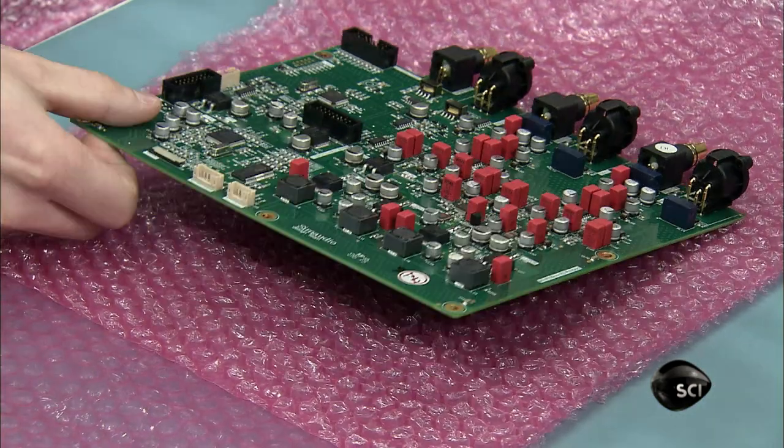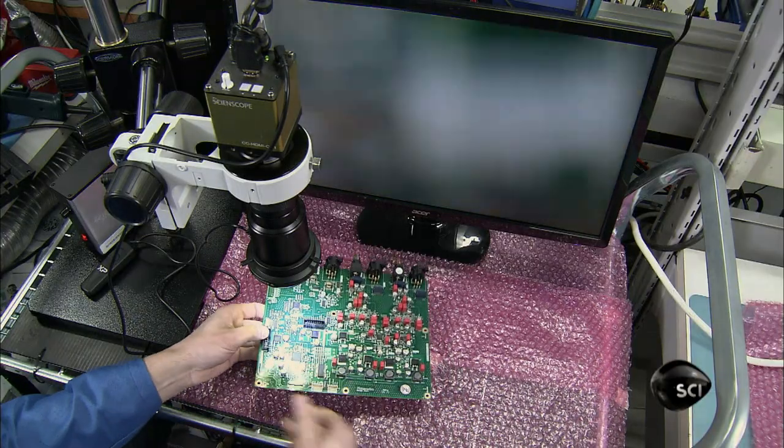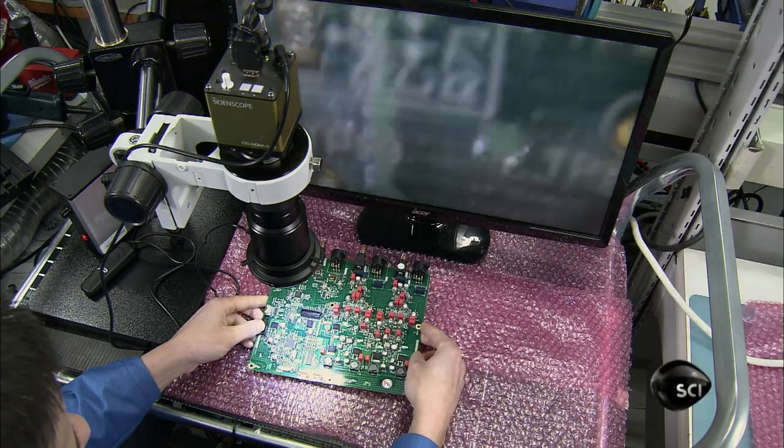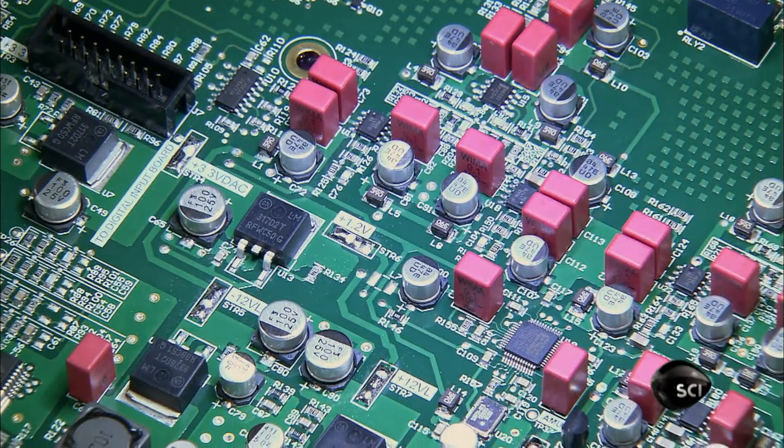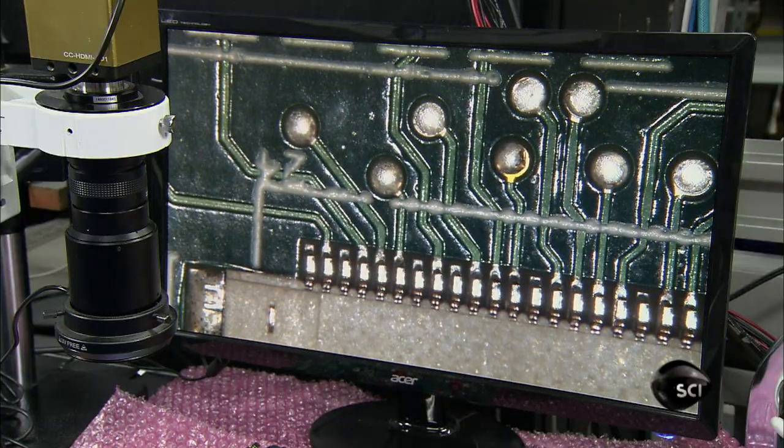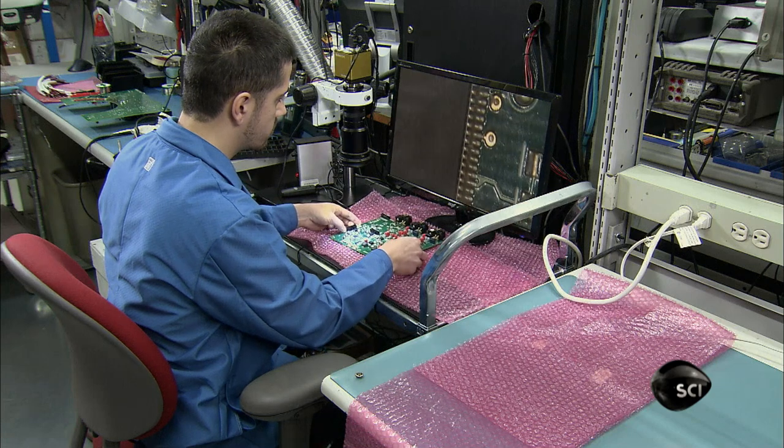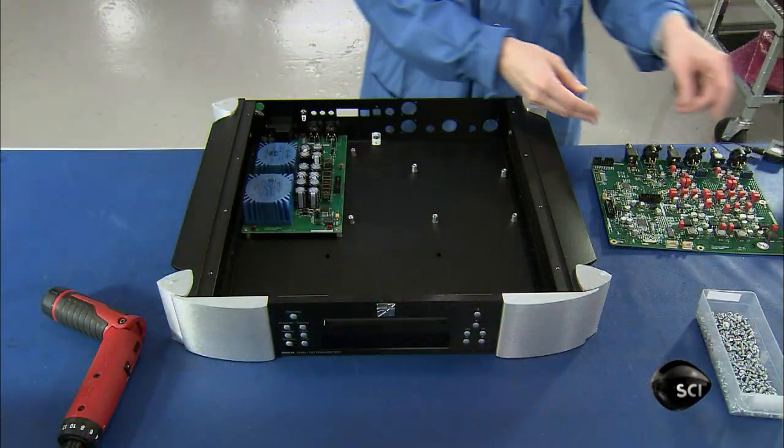The technician visually inspects the converter's main circuit board, which converts the digital signal to analog. A microscope hooked up to a camera magnifies the board 50 times, so the technician can detect any soldering defects or other flaws.